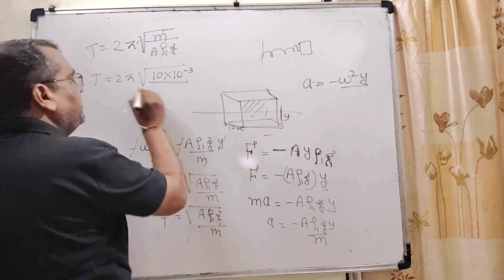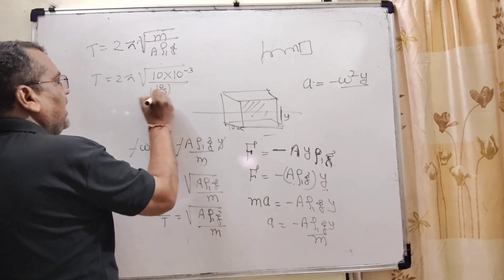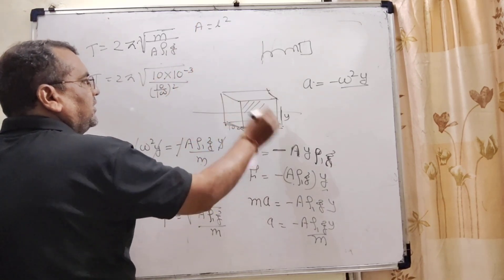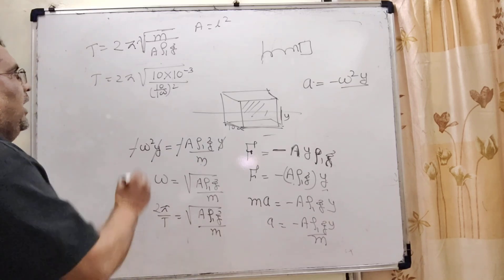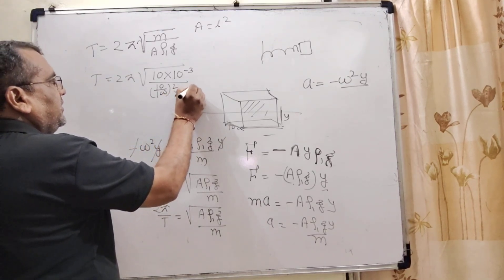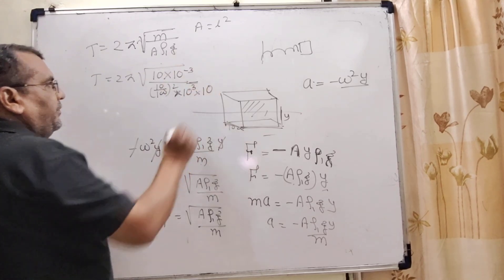is (10/100)² m² = l². Density of water is 10³ kg/m³ and g is 10 m/s².